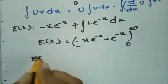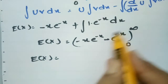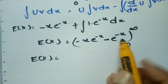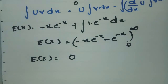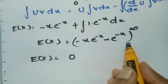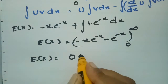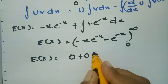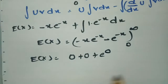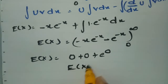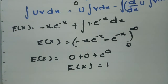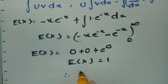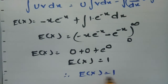We know that e^(-∞) = 0, so the upper limit contributes 0. At the lower limit x = 0, the term minus x·e^(-x) is 0, and minus e^(-x) becomes minus e^0. Therefore E(X) = 0 - (0 - 1) = 1, giving e^0 = 1, so E(X) = 1.